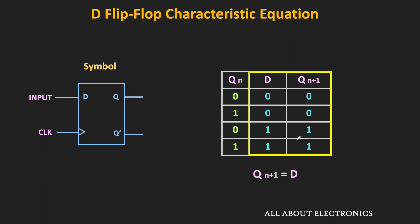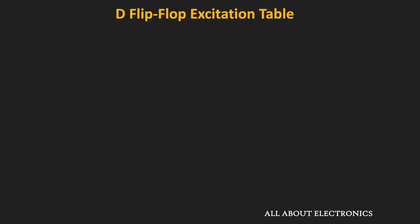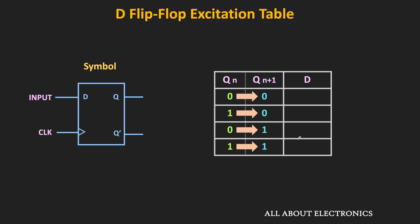Now let us see the excitation table of this D flip-flop. The excitation table is very useful during the synthesis or design of digital circuits — it's like looking at the truth table in reverse. It shows the required input or excitation to the flip-flop to go from one state to the next particular state. If Qn is 0 and we want Qn+1 to be 0, then D should be 0. If Qn is 1 and we want Qn+1 to be 0, then D should again be 0. Irrespective of the current state of Qn, if we want Qn+1 to be 1, then D should be 1. This is the excitation table of the D flip-flop.